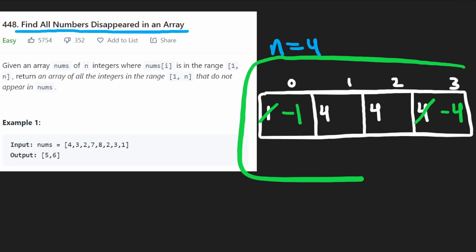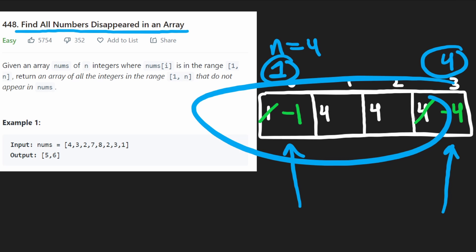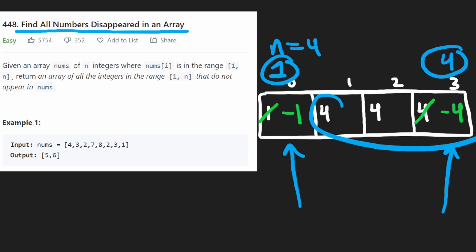If the value at index two is positive, that means two does not exist in our array, but the data itself is not changed. This is going to be a four or it's going to be a negative four. So we can always take the absolute value of it. So now we're done iterating through the array. And like I said, since this is negative and this is negative, that means zero plus one, one, and three plus one, four, these do exist in our input array, which is of course true, right? We had a one and we had some fours.